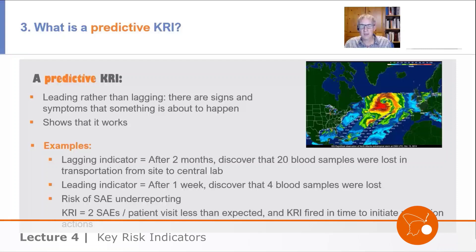We also want to know that a KRI actually works. This is where key risk indicators that have been used many times — such as a core set or therapeutic-specific ones — prove their value. As you use them again and again within studies, you can see over time that they do predict, they do make sense, and they do give you useful information.